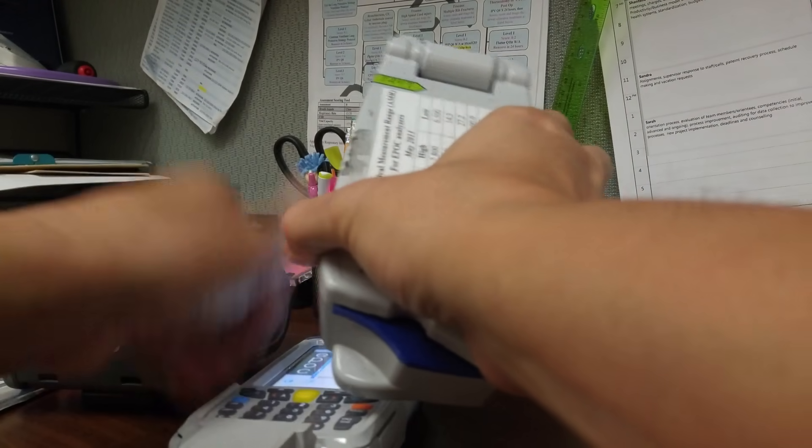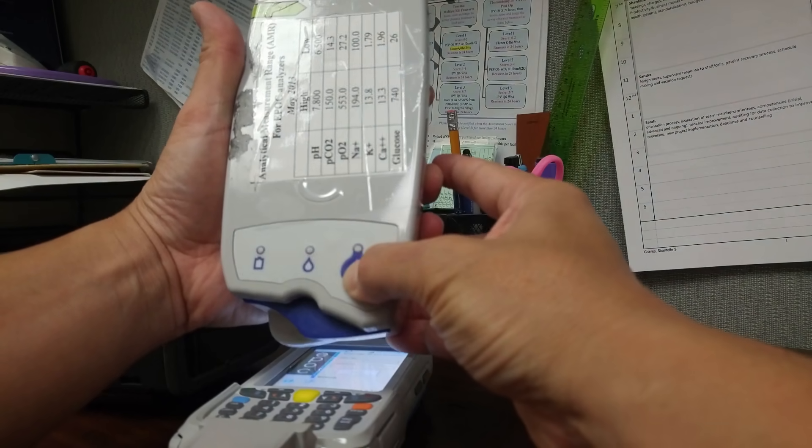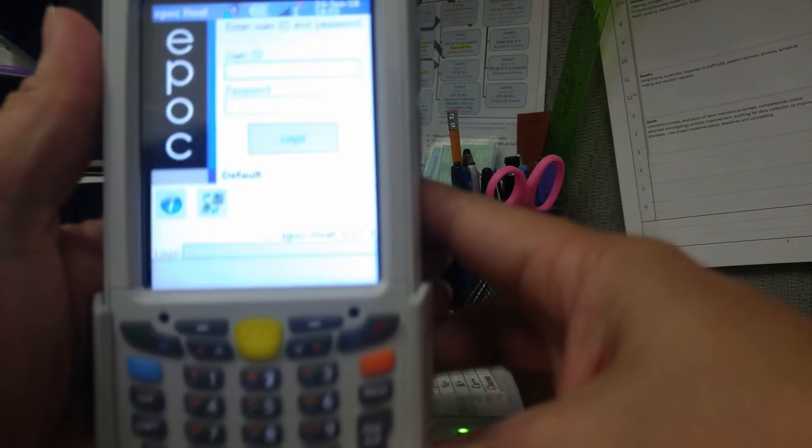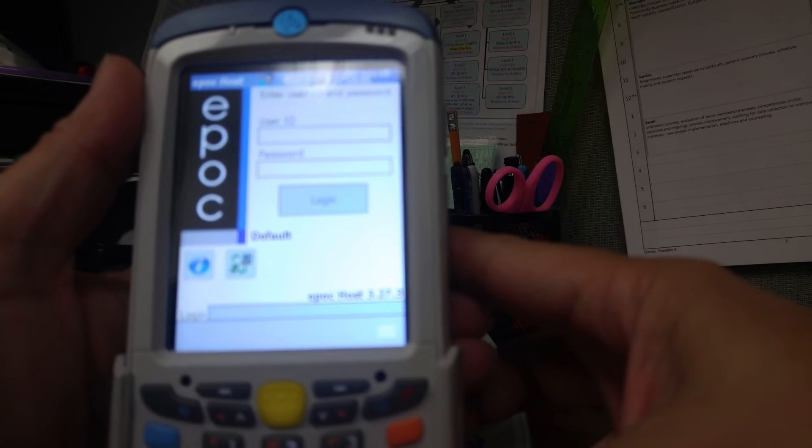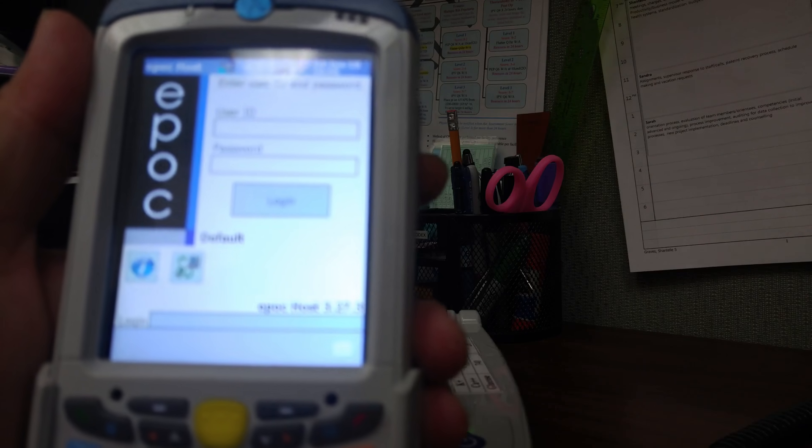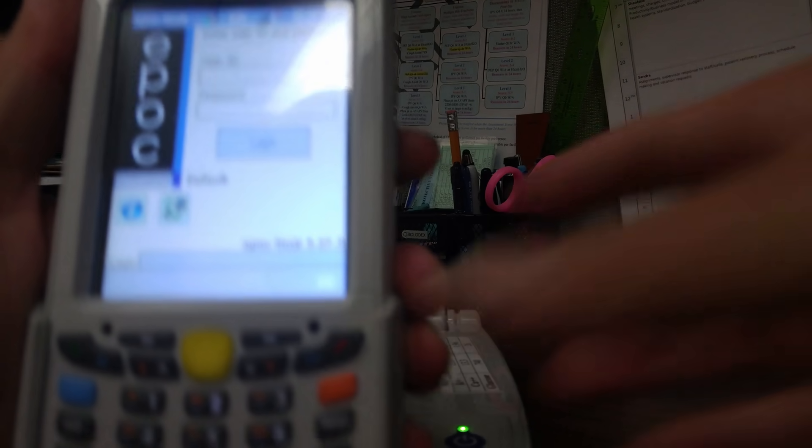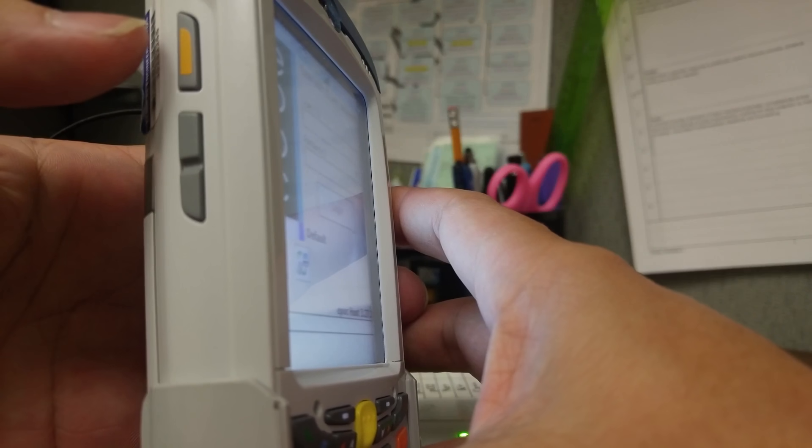The base has an on button. So in order to log in, you have to scan your badge. You can either press this yellow button right here on the side. There's another yellow button on the side right here.